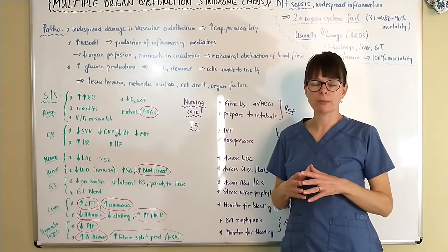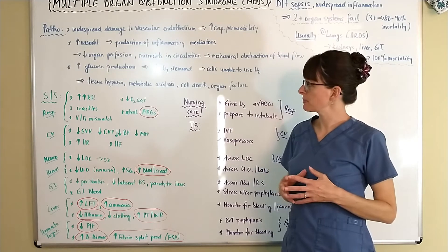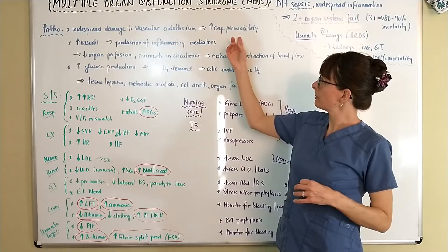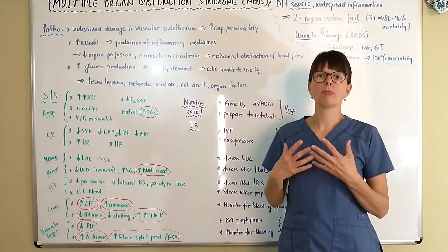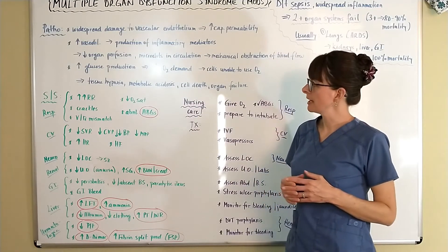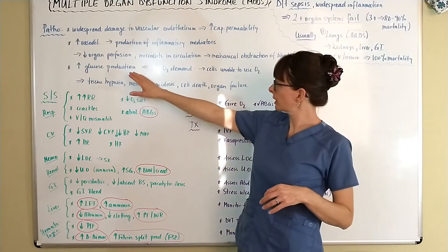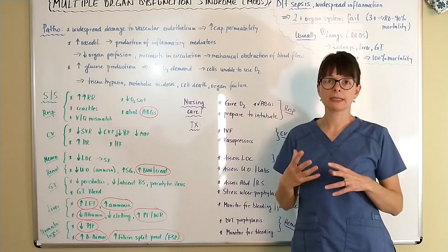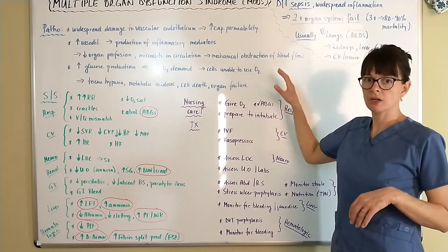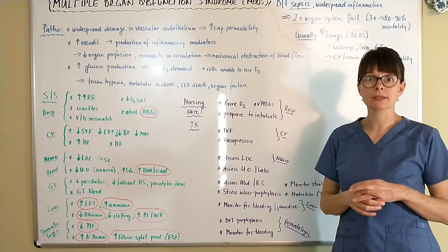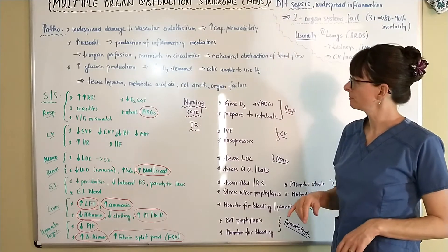Vascular endothelium damage leads to increased capillary permeability because of the release of endotoxins from the bacteria causing the sepsis. This massive capillary permeability leads to vasodilation, which causes the body to produce more inflammatory mediators, then causing low blood pressure. When there's low blood pressure, the organs don't get perfused, and because of platelet activation, microclots occur in the circulation, creating a mechanical obstruction of blood flow.